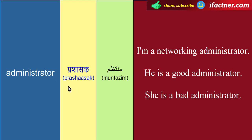Administrator ka meaning hai prashasak, yaani ke muntazim. Teen example sentences: 'I am a computer network administrator' — mein network ka prashasak hoon, mein network muntazim hoon. 'He is a good administrator' — woh achha prashasak hai, woh achha muntazim hai. 'She is a bad administrator' — woh buri prashasak hai, woh buri muntazim hai.